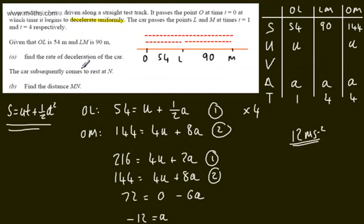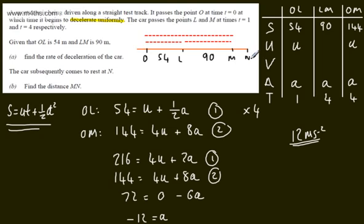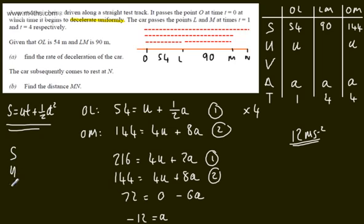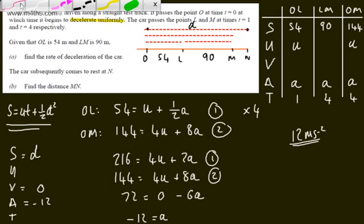The car subsequently comes to rest at N. We need to find the distance MN. I'll mark point N on the line beyond M. If I find the total distance from O to N and subtract OM which is 144, then I have MN. Using SUVAT for the journey O to N: acceleration is negative 12, and since the car comes to rest the final velocity V equals 0. I'll define the total distance as D. I still need U, the initial velocity.